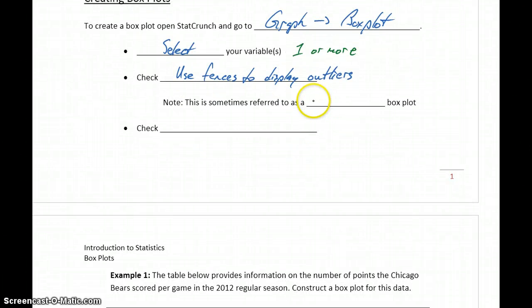And just as a note, sometimes that type of graph, where we use those fences to display outliers, is referred to as a modified box plot. Some of the questions in the homework will reference specifically constructing that modified box plot, others won't, but in either case we're just saying use fences to display outliers.